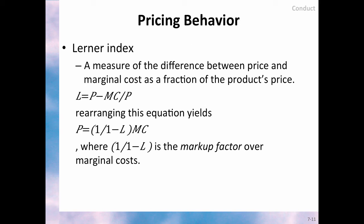Another important factor that can have an impact on market structure is the ability of companies to control the market price. One way to measure this is called the Lerner Index, which is a measure of the difference between the price charged by the company and marginal cost as a fraction of the product's price. If L, the Lerner Index, is 0, it means no control over price and therefore buyers pay a price equal to marginal cost. But if L is larger than 0, it means that the company has some control over price and can charge a price above marginal cost. Another way to see this results from rearranging the equation and solving for price. Consult your textbook for a numerical example.